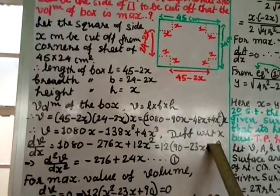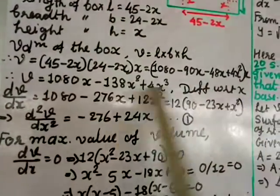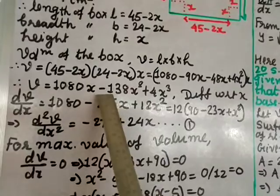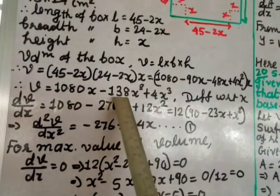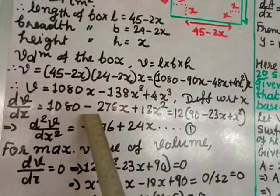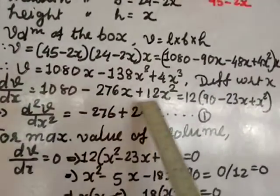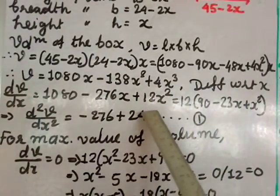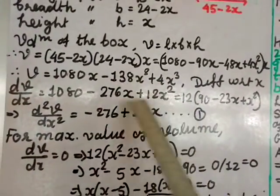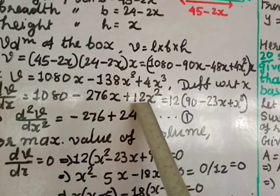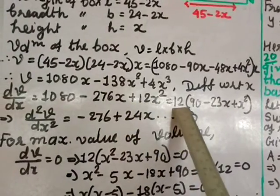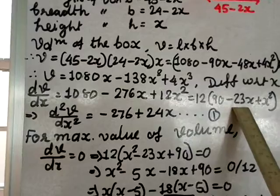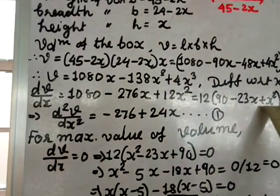Differentiating V with respect to x: dV/dx = 1080 minus 276x plus 12x squared. Taking 12 as common factor gives 12 times (90 minus 23x plus x squared).